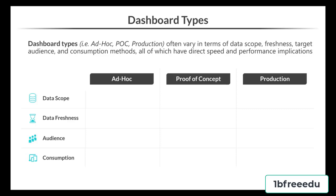Ad hoc dashboards will be used by daily analysts drilling into information to find answers to business questions. A proof of concept is a pre-production version of the dashboard that isn't fully baked. A production dashboard is the final product, developed and optimized for end users within the business. There's a cross section across all three types including data scope, data freshness, audience, and consumption method.